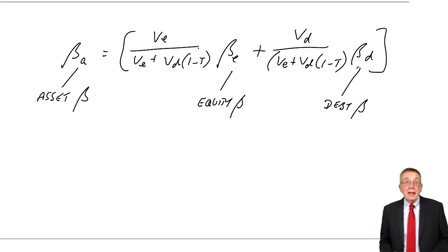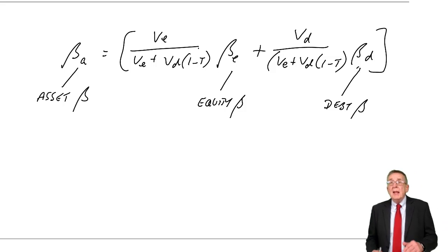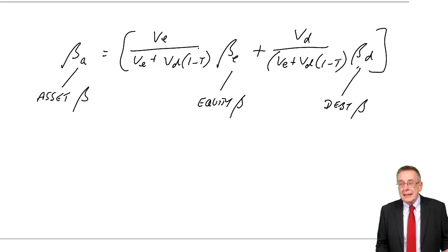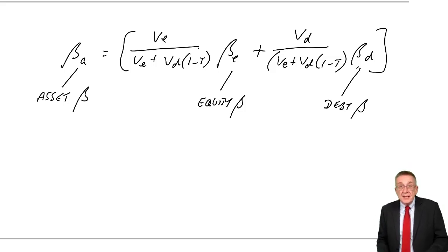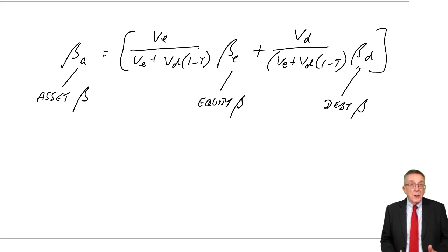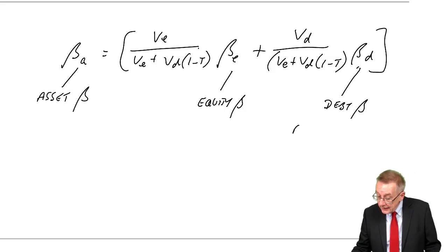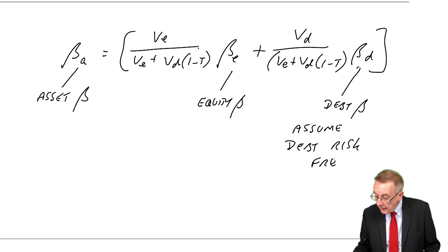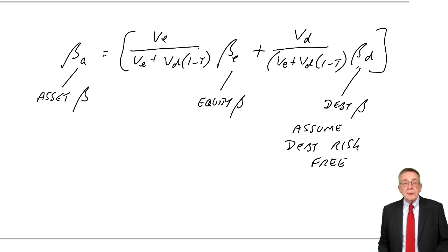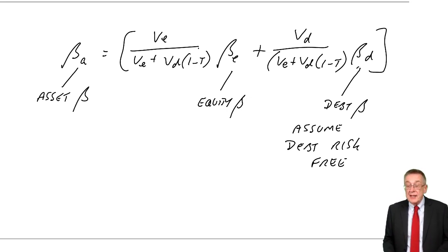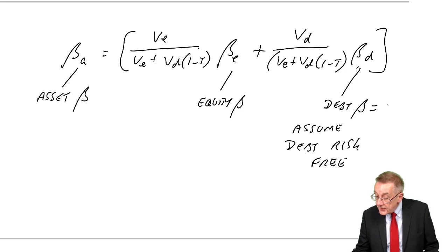Debt in a company is much less risky for investors than equity. The measure of riskiness — the beta of debt — would be a lot lower. In the exam, we always assume, just for this formula, that debt is risk-free. From what I said in the capital asset chapter, if debt has no risk — zero risk — then the debt beta is zero.